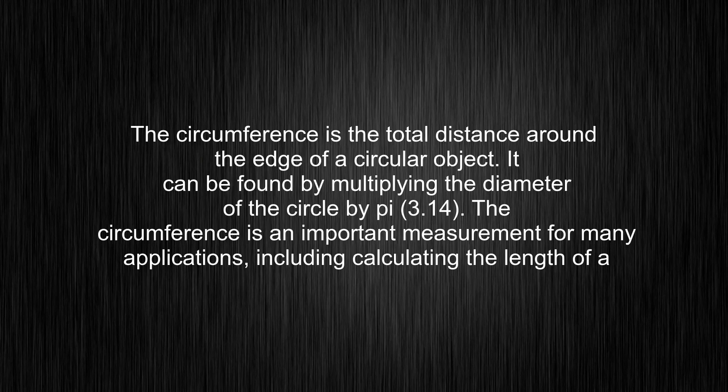The circumference is the total distance around the edge of a circular object. It can be found by multiplying the diameter of the circle by pi (3.14).